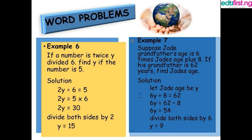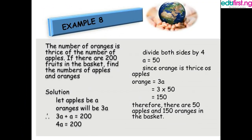Example 7: Suppose Jadi's grandfather's age is 6 times Jadi's age plus 8. If the grandfather is 62, find Jadi's age. We let Jadi's age be y. The expression is 6y plus 8 equals 62. Collecting like terms: 6y equals 62 minus 8, so 6y equals 54. Dividing both sides by 6, y equals 9 — Jadi is nine years old.